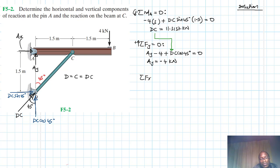And then finally, we have summation of forces in the X direction, like so. What do we have? We have AX plus DC sin 45 equal to zero. So we have already found what DC is. DC is equal to 11.3137.